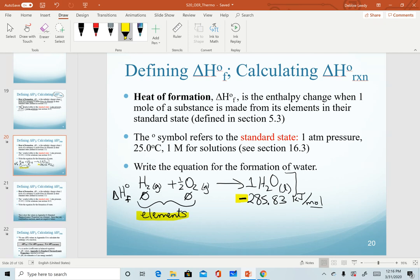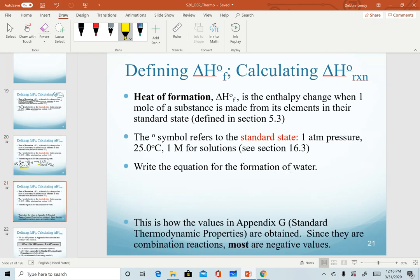To calculate our enthalpies of reaction, we will use values in appendix G. Values in appendix G can be looked up. You will actually be looking up enthalpy of formation values in that appendix if they're not given. And as we go through the chapter, we'll keep referring to values in appendix G for reference.